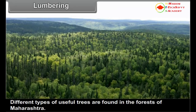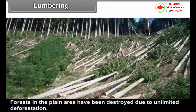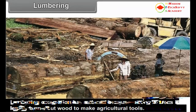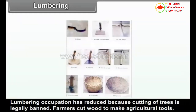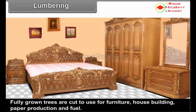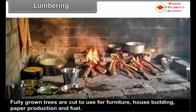4. Lumbering: Different types of useful trees are found in the forests of Maharashtra. Forests in the plain area have been destroyed due to unlimited deforestation. Lumbering occupation has reduced because cutting of trees is legally banned. Farmers cut wood to make agricultural tools. Fully grown trees are cut to use for furniture, house building, paper production and fuel.